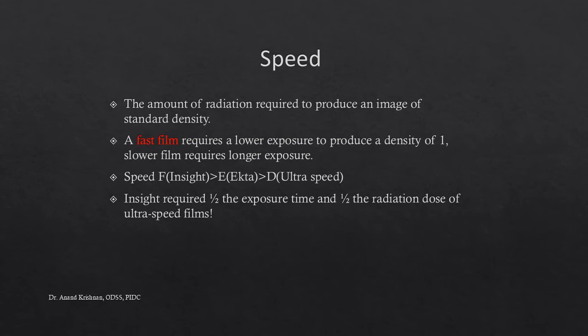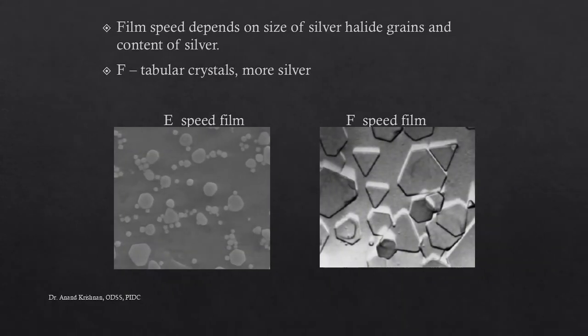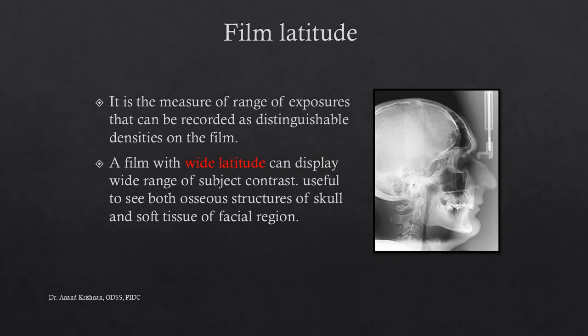Regarding film speed: a fast film requires lower exposure to produce an image of standard density, while a slower film requires longer exposure. Speed F is the fastest, faster than Speed E, which is faster than Speed D. Speed F requires only half the exposure time and half the radiation dose compared to Speed E (ultra-speed) films. Film speed depends on the size and silver content of grains; F-speed films contain tubular crystals with more silver, increasing efficiency.